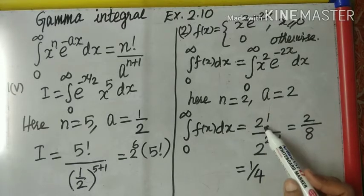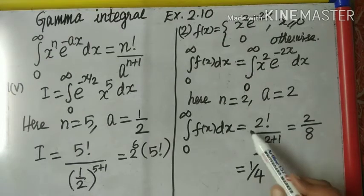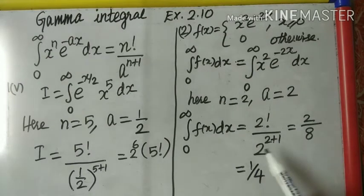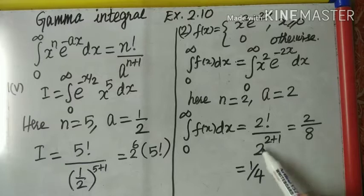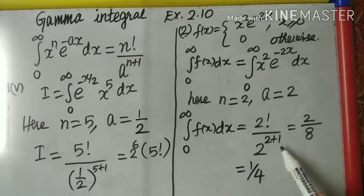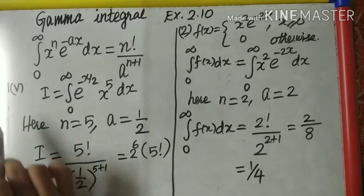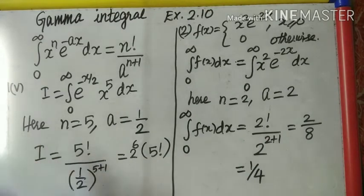2 factorial means 1 times 2, which is 2. 2 to the power 3 means 2 times 2 times 2. Simplify and cancel to get the answer. Question number 1, subsection 5.